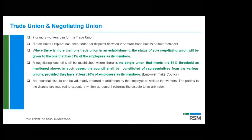Provisions related to trade unions have been elaborately laid out — seven or more workers can form a trade union, and more than one trade union is possible. A concept of negotiating union has been introduced: any union with support of more than 51 percent of employees will be called the negotiating union, having sole power to negotiate with the employer. If no union has 51 percent threshold, a negotiating council is created with representatives from different trade unions — those having more than 20 percent of employees get representation.